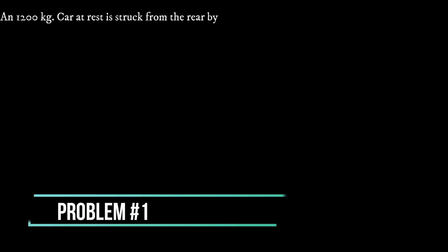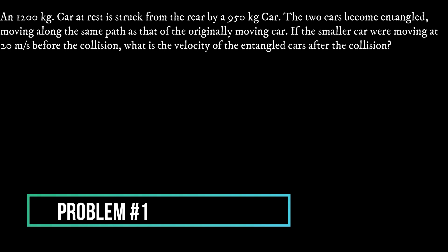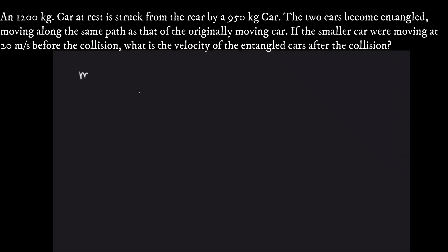Problem number one: A 1200 kg car stopped at a traffic light is struck from the rear by a 950 kg car. The two cars become entangled, moving along the same path as that of the originally moving car. If the smaller car was moving at 20 m/s before the collision, what is the velocity of the entangled cars after the collision? We can see this is a perfectly inelastic collision since the cars become entangled and stick together after the collision.